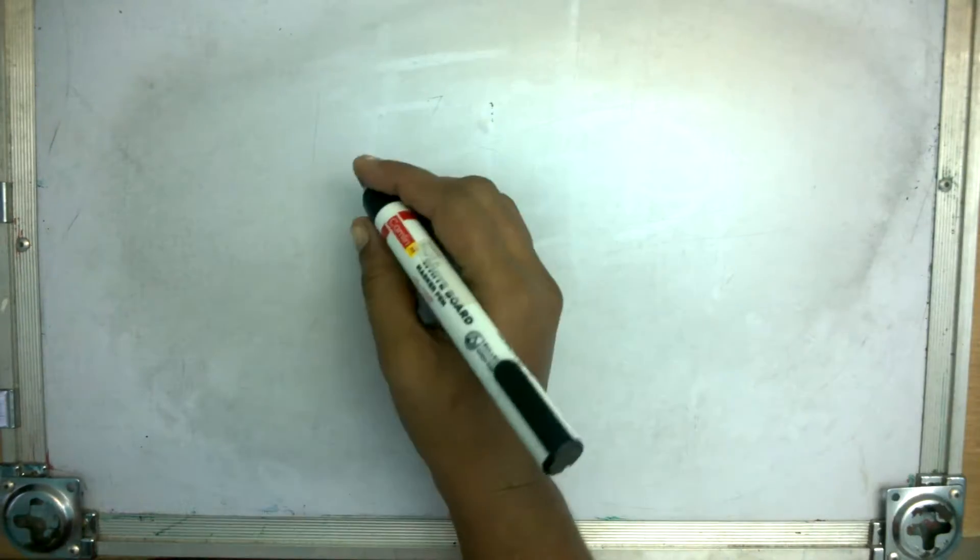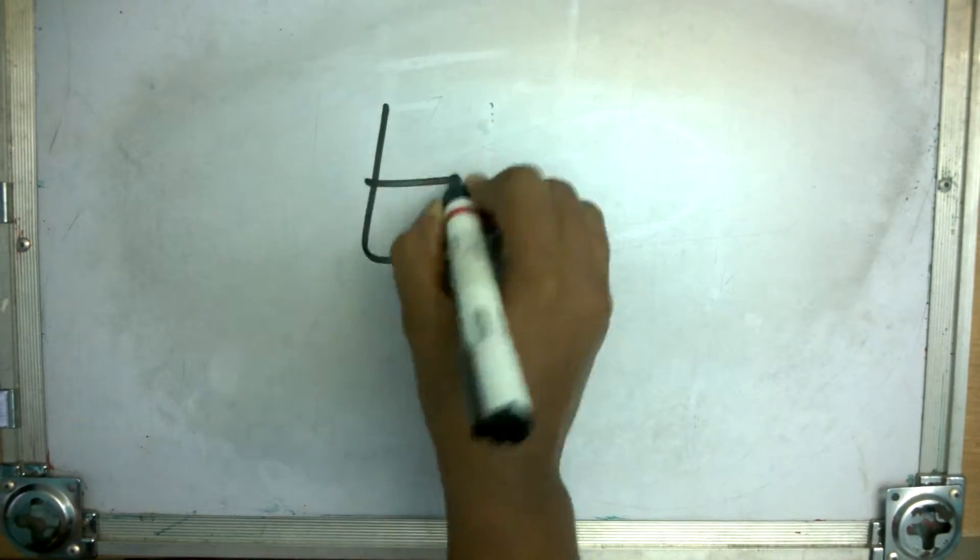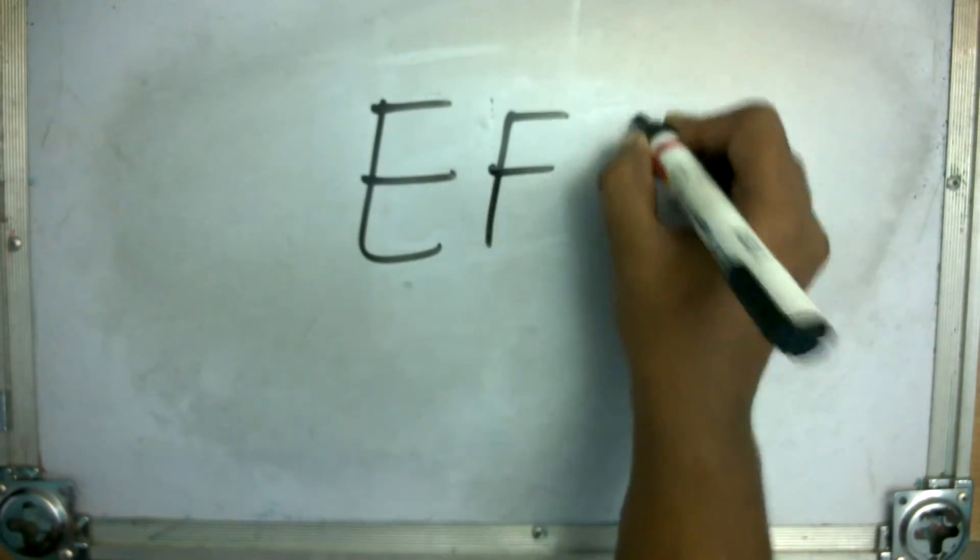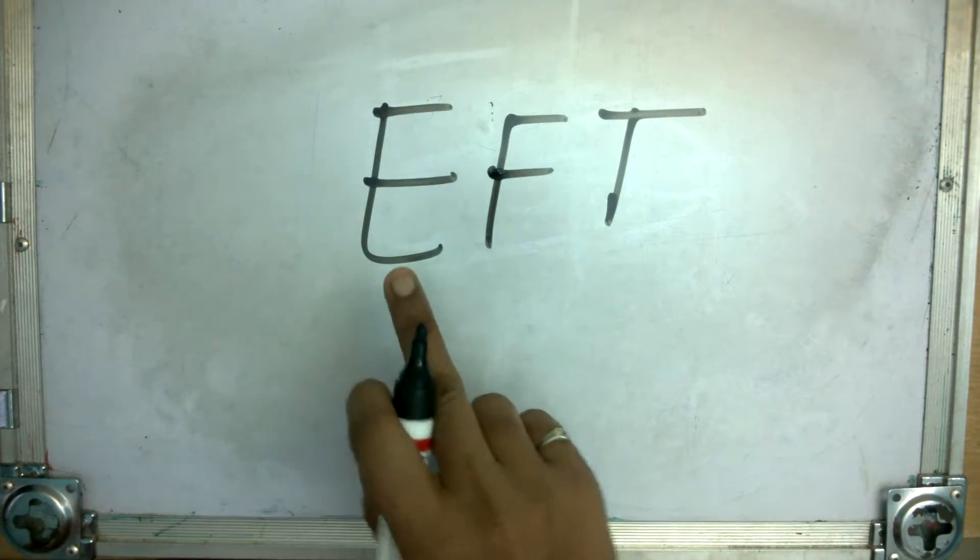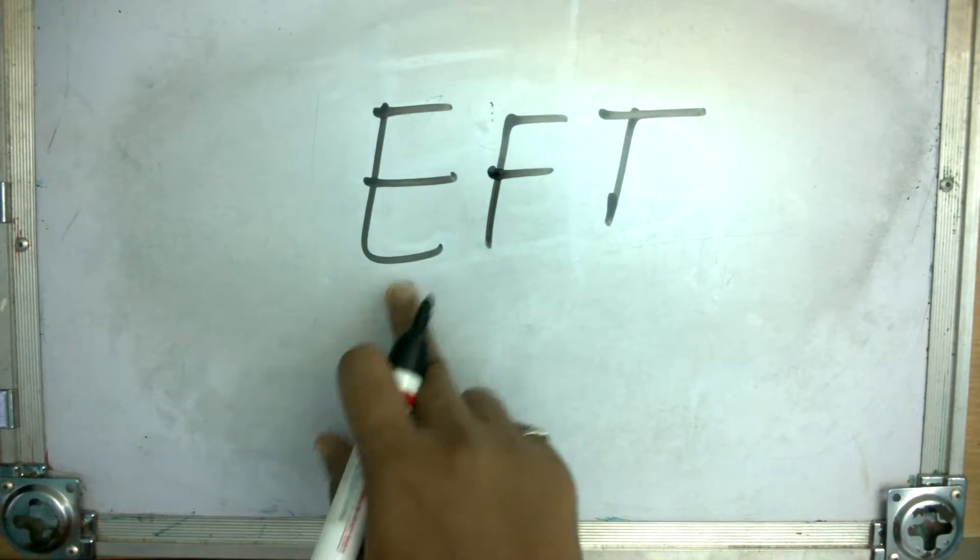Next one E, F-T, EFT. E sounds A, F sounds F, T sounds T.